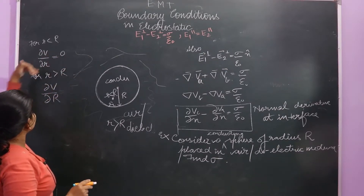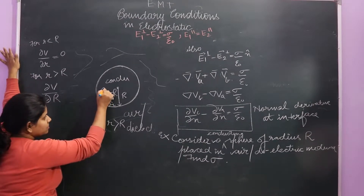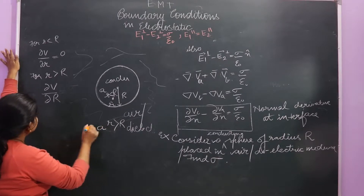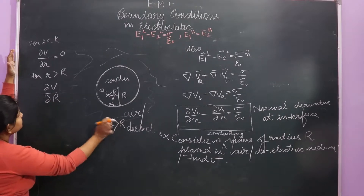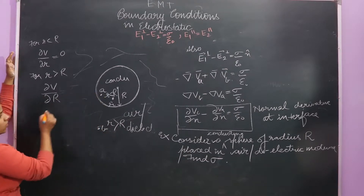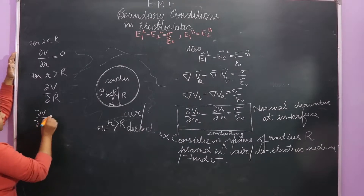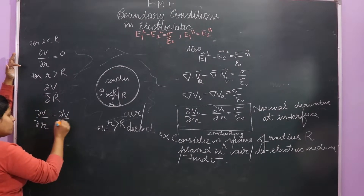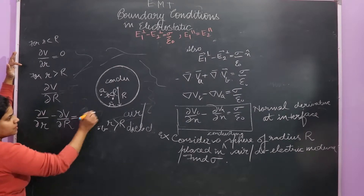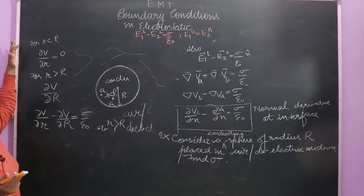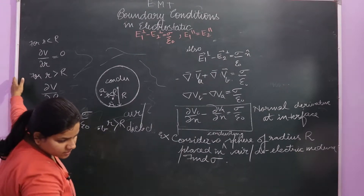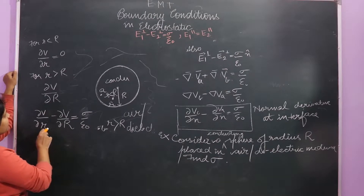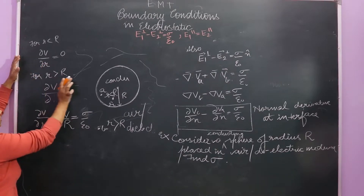del V upon del r for the inside — since this V is constant, that derivative will be zero. But for the outside it will give some value. So zero minus del V upon del r for the outside equals σ upon ε₀. Therefore σ equals minus ε₀ del V upon del r.